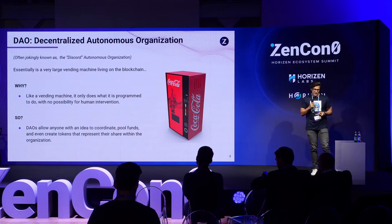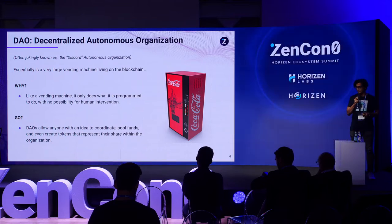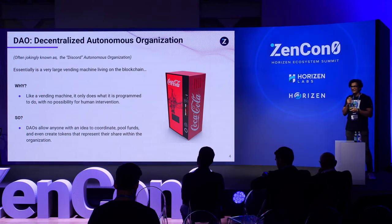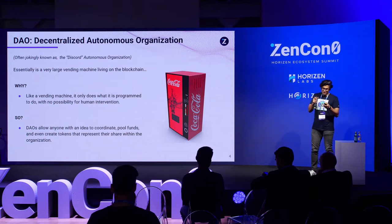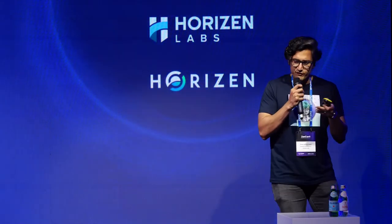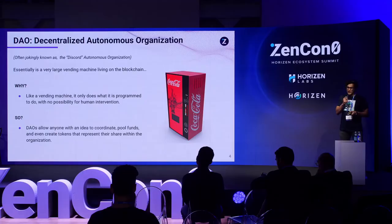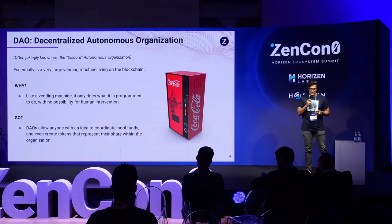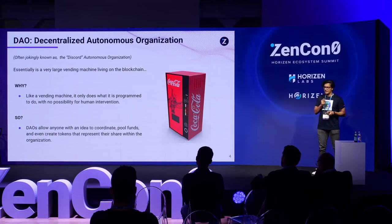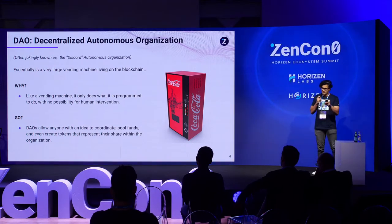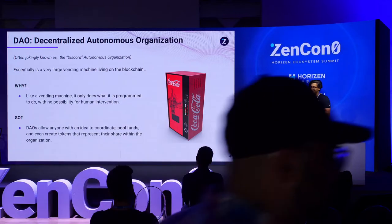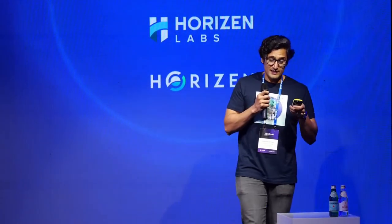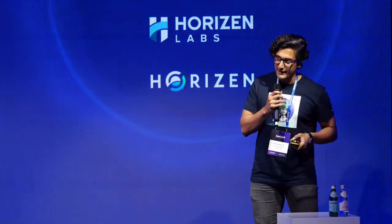DAO first stands for Decentralized Autonomous Organization. And often jokingly, because anyone can create a Discord group and have a community build up and its tools exist, it's often known as the Discord Autonomous Organization. But the way to visualize this is think of it like a vending machine — a large vending machine that exists on a blockchain. Just like a vending machine, it only does what it is programmed to do: you put money in, you get Coke out; you put money in, you get a chocolate out. Nothing more, nothing less. So a DAO allows anyone with an idea to coordinate, pool funds, and even create tokens that represent their share within that organization.